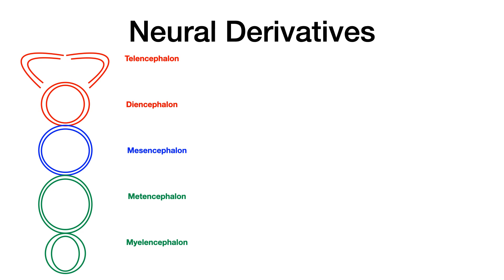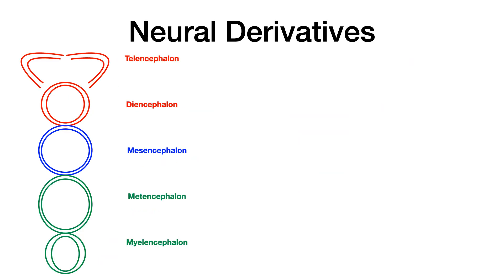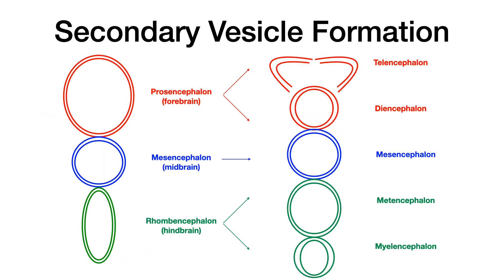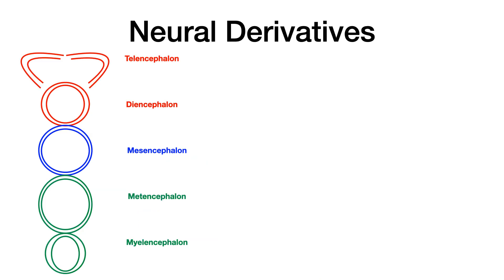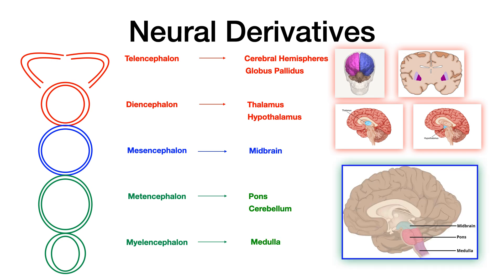Each of these three primary vesicles gives rise to more structures — secondary vesicles. The prosencephalon gives rise to both the telencephalon and the diencephalon. The mesencephalon gives rise to the mesencephalon. The rhombencephalon gives rise to both the metencephalon and the myelencephalon. These secondary vesicles then give rise to neural derivatives: the telencephalon gives rise to the cerebral hemispheres and the globus pallidus; the diencephalon gives rise to the thalamus and the hypothalamus; and the mesencephalon, metencephalon, and myelencephalon give rise to the midbrain, pons, cerebellum, and medulla.